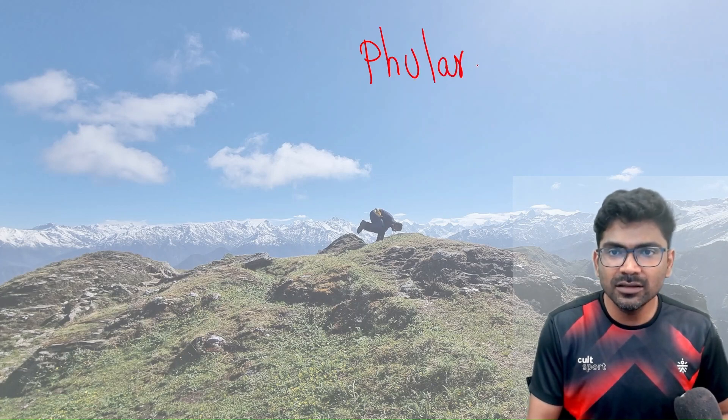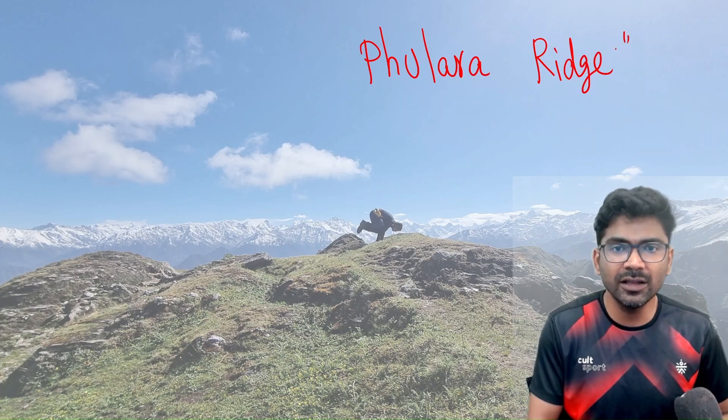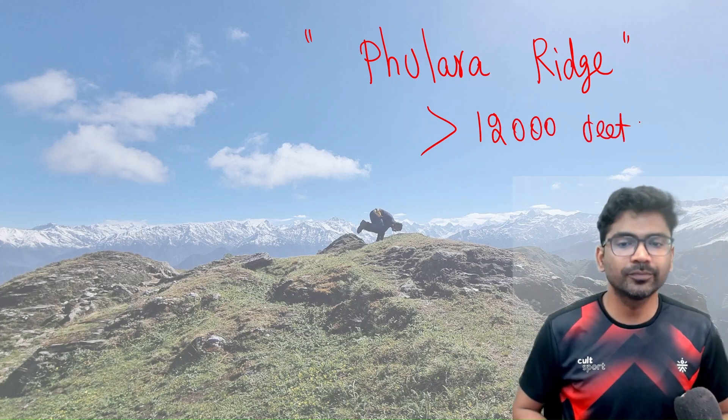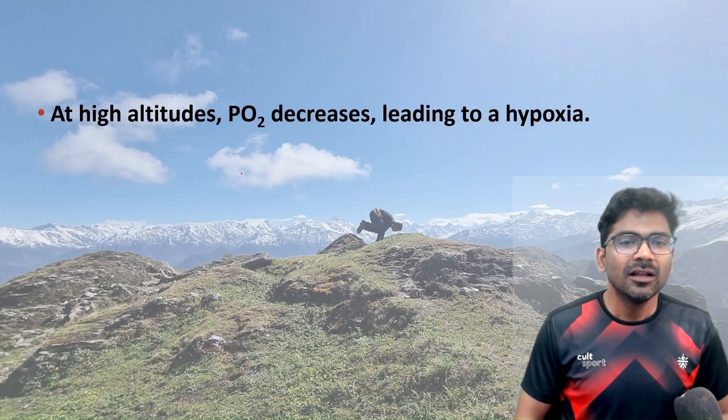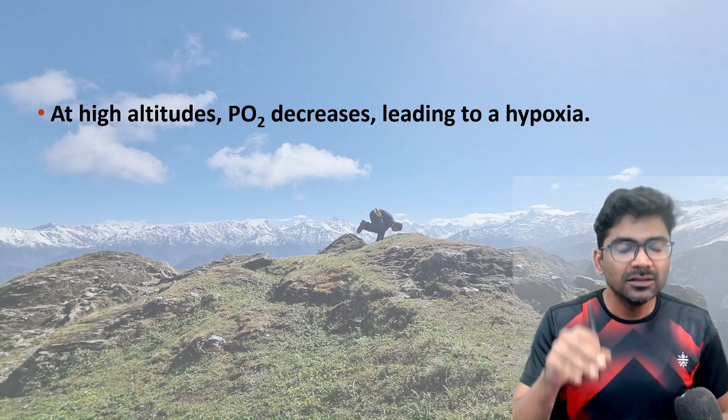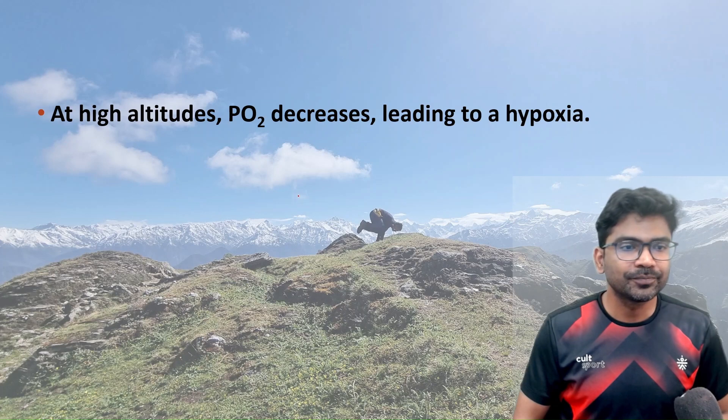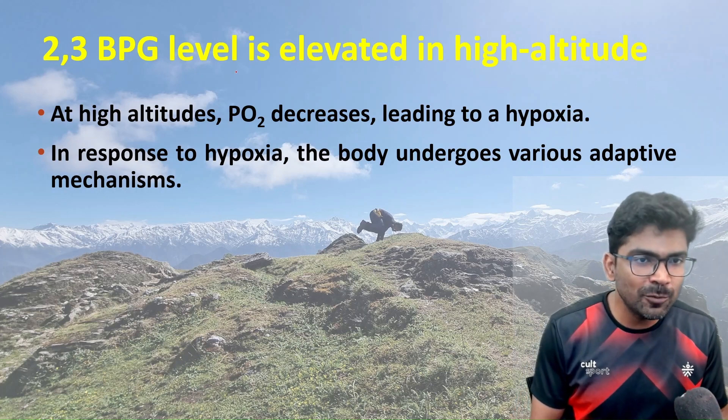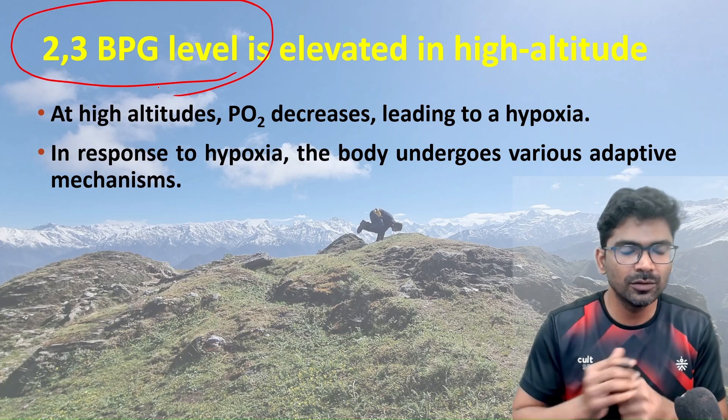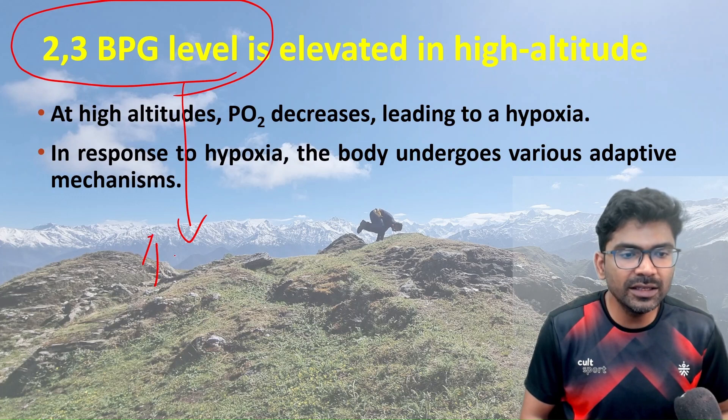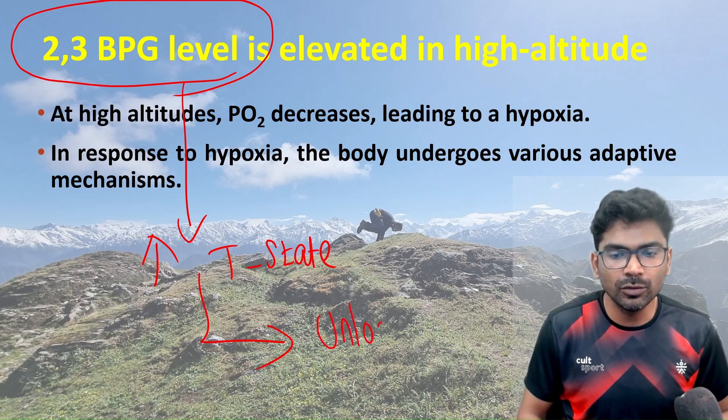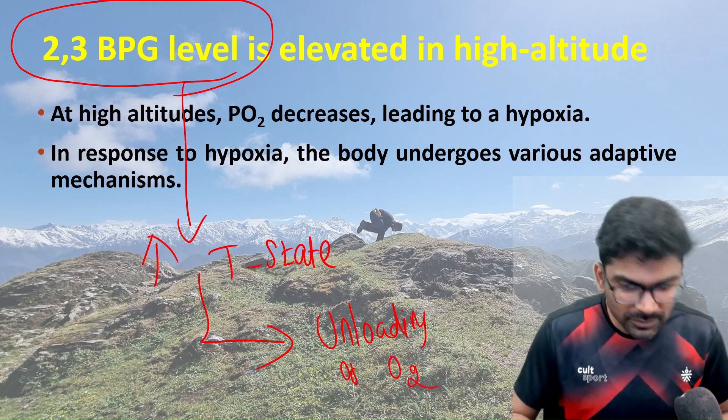Look at this. This is one of the treks I went last year. This is Kulara Ridge trek. The altitude is more than 12,000 feet above sea level. So what happens in high altitude? The partial pressure of oxygen is low, leading to hypoxia. In response to hypoxia, the body undergoes various adaptive mechanisms in high altitude. One of the adaptive mechanisms is increased 2,3-BPG. Increased 2,3-BPG means increased T state of hemoglobin. Increased T state of hemoglobin means unloading of oxygen to the tissues.